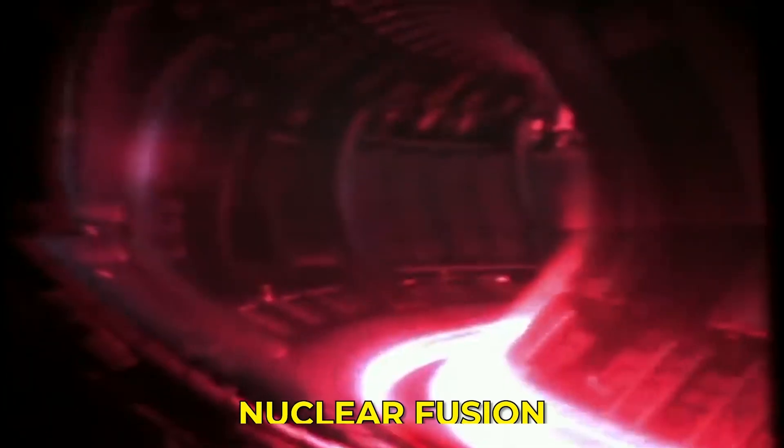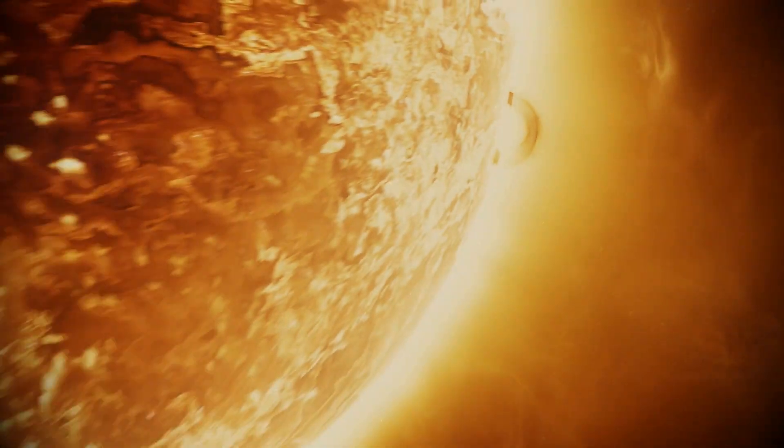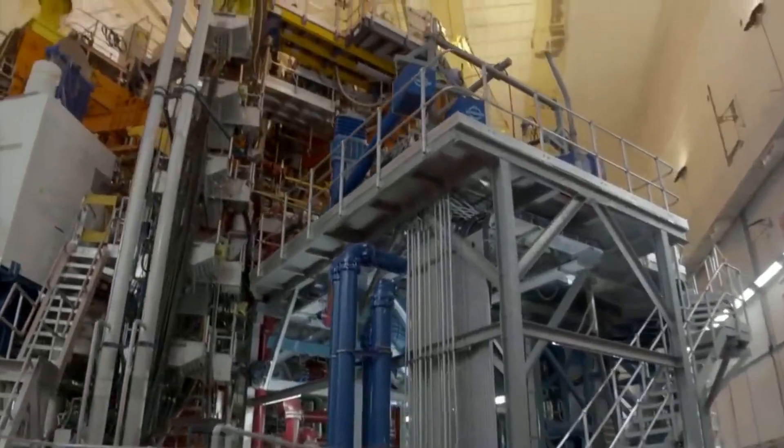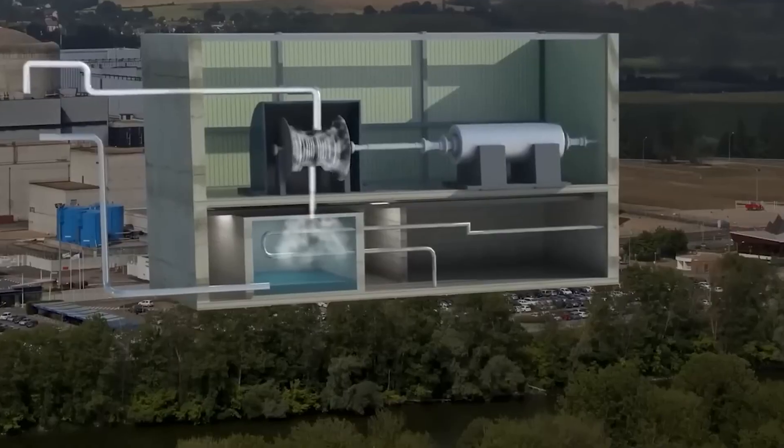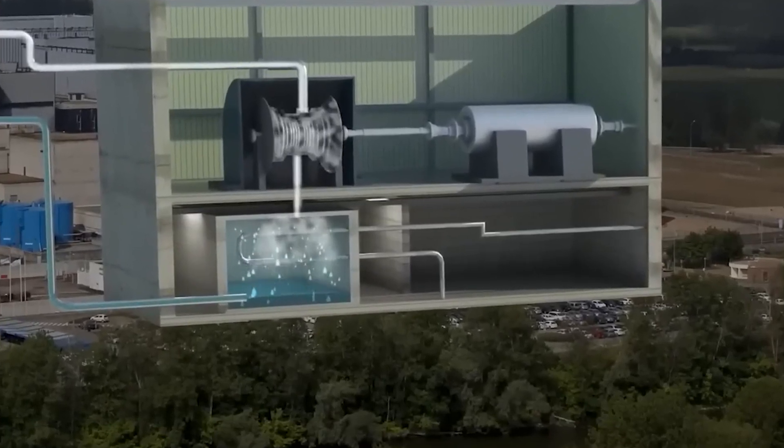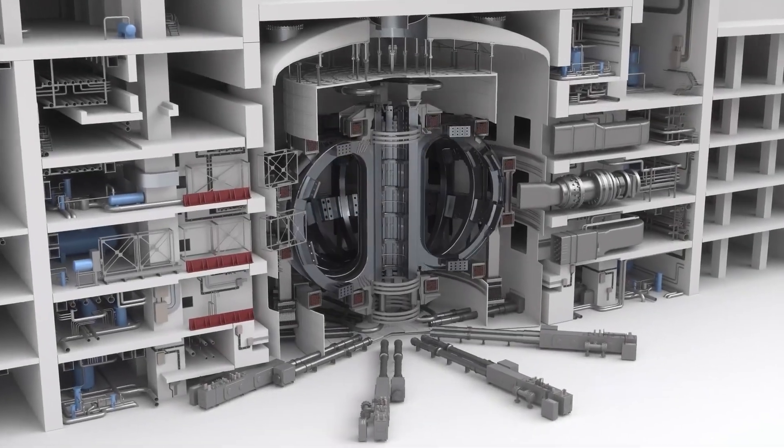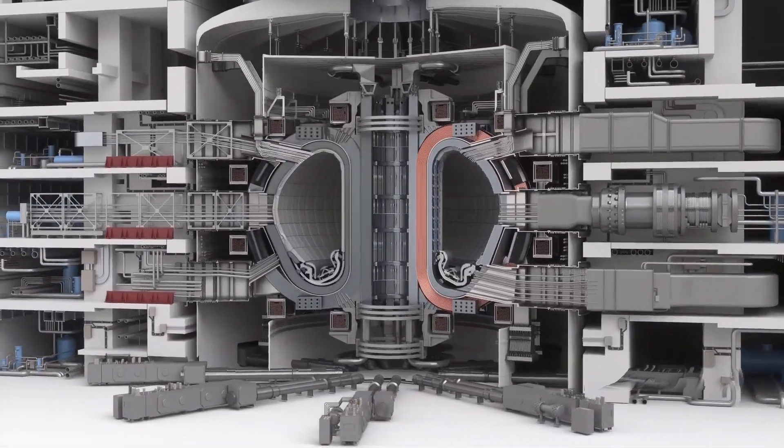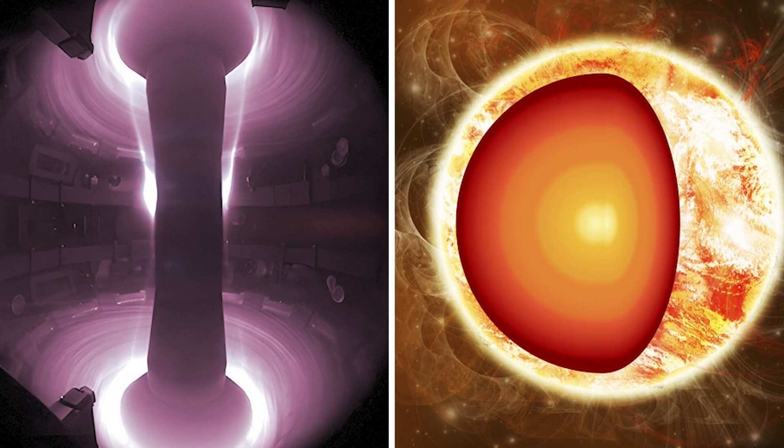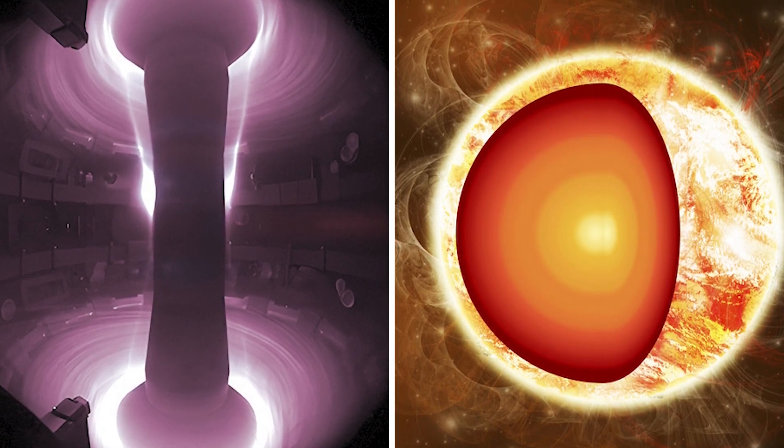This idea naturally leads to another frontier in power technology: nuclear fusion. Fusion aims to recreate the same process that powers the sun, fusing light atomic nuclei to release massive amounts of energy. For decades, scientists have worked toward the dream of a fusion reactor that produces more power than it consumes. However, that goal, known as net energy gain, remains out of reach. The most advanced design today is the Tokamak, a donut-shaped reactor that uses powerful magnetic fields to confine plasma hotter than the sun's core.